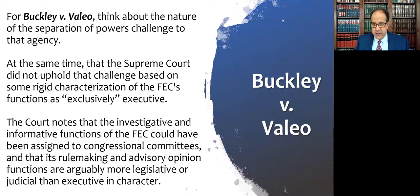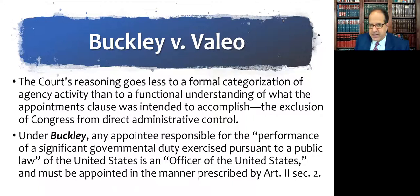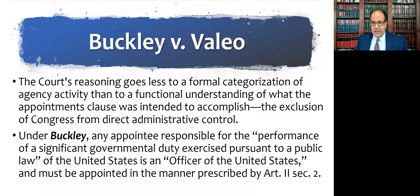Depending on the order your casebook goes in, this case often comes before Humphrey's Executor, where the court lays out an analytical rubric to look at whether the agency is performing executive or other legislative or judicial-type functions. The court here acknowledges the Federal Elections Commission is making rules, sometimes bringing enforcement actions, and sometimes acting very judicial in settling disputes and conducting hearings. The court's reasoning goes less to a formal categorization of agency activity than to a functional understanding of what the Appointments Clause was intended to accomplish — which this case says was the exclusion of Congress from direct administrative control.